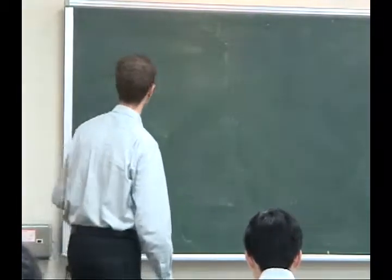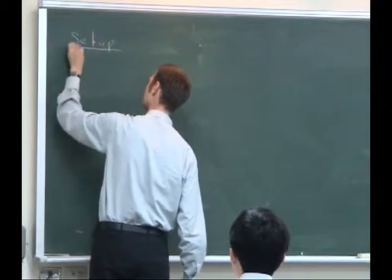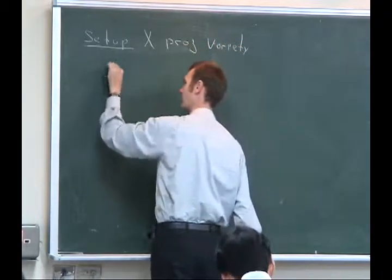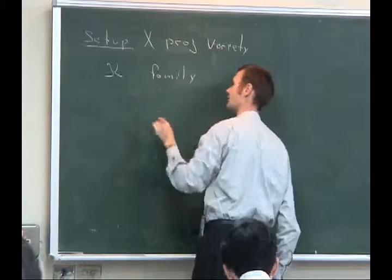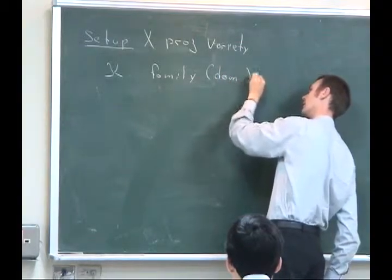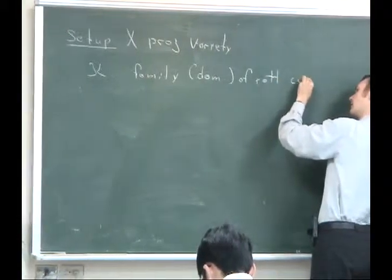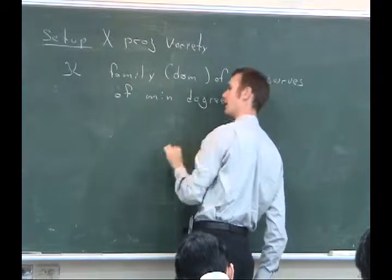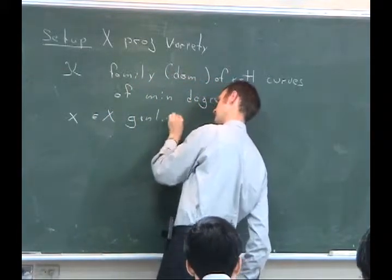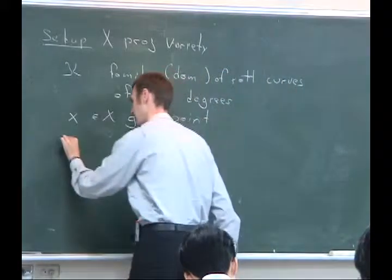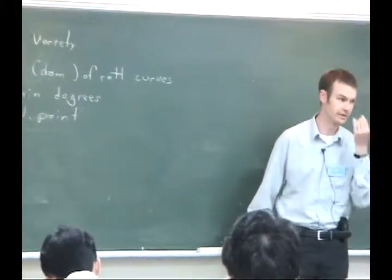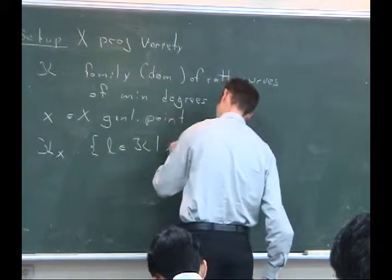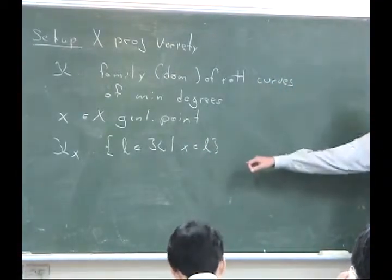Let me briefly recall the notation so I have it on the blackboard to refer to it. The setup we discussed yesterday was that X was a projective variety, and K was a dominating family of rational curves of minimal degree. For x in X a general point, KX is the subfamily of all rational curves of minimal degree that actually contain x — that is, L in K which contain x — and we have seen that this is proper.